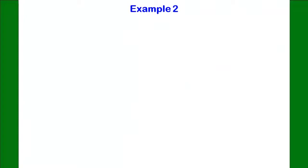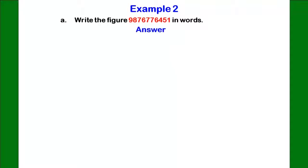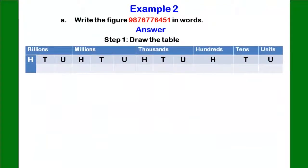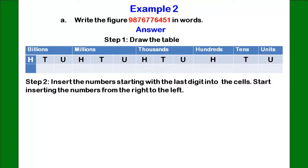The next example is longer but easy to resolve if you followed the first example. Let's consider writing the figure 9,876,776,451 in words. Step 1: draw out the table. Before you start filling your digits into the columns, remember that you are to fill your digits from the right-hand side and end on the left-hand side.